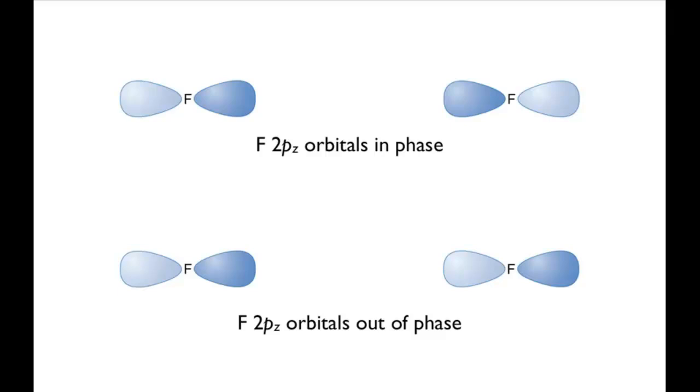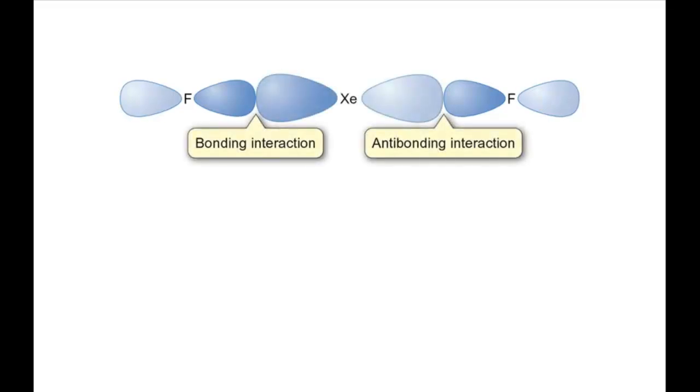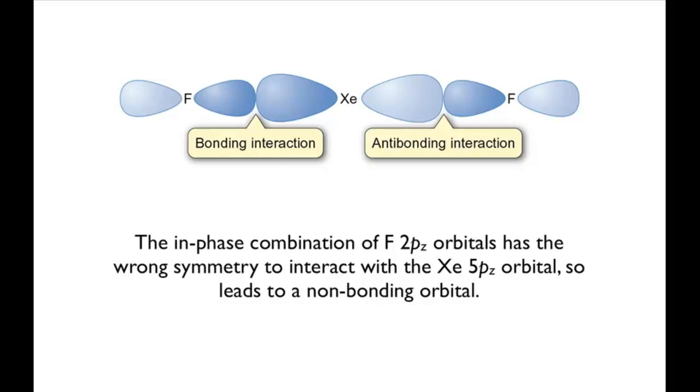The next step involves seeing how these two fluorine orbital combinations interact with the xenon pz orbital. The in-phase combination has the wrong symmetry to interact with this orbital and as a result there's no interaction. This combination of fluorine orbitals is therefore non-bonding.